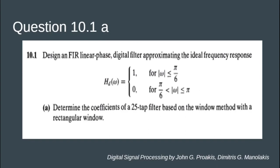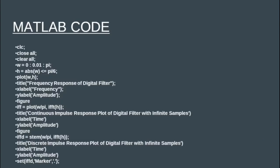Design an FIR linear phase digital filter approximating the ideal frequency response: H_D(ω) = 1 for |ω| ≤ π/6, and 0 for π/6 < |ω| ≤ π. We have to determine the coefficients of a 25-tap filter based on the window method using a rectangular window.